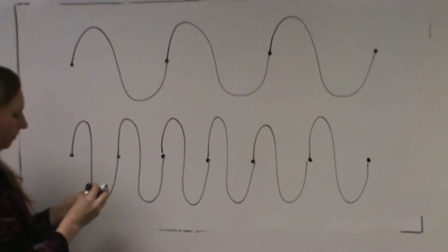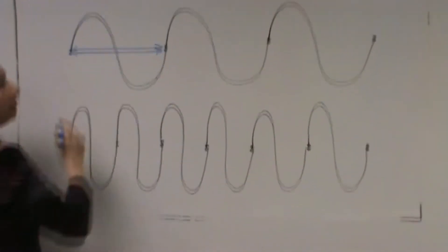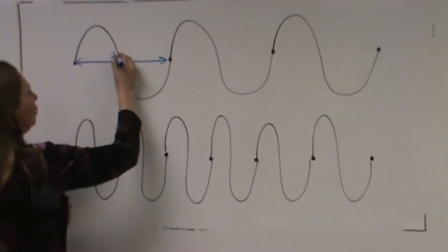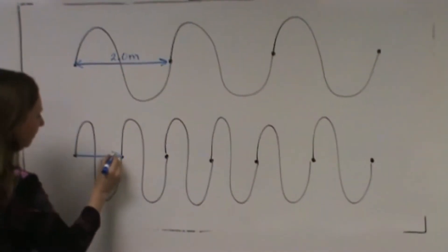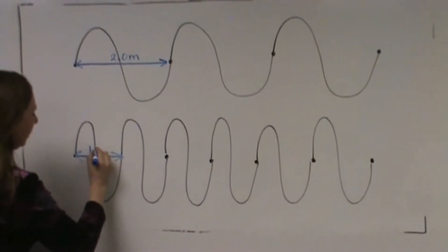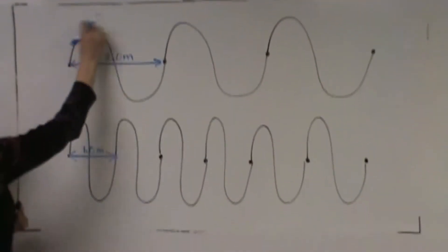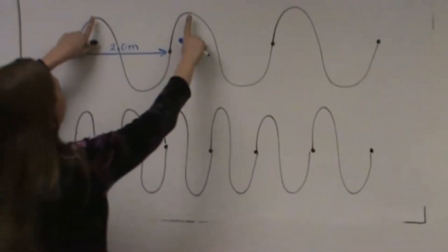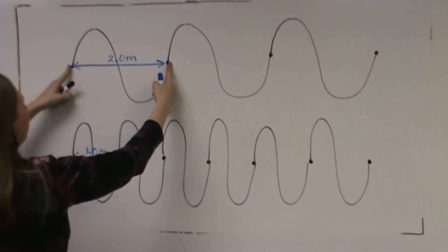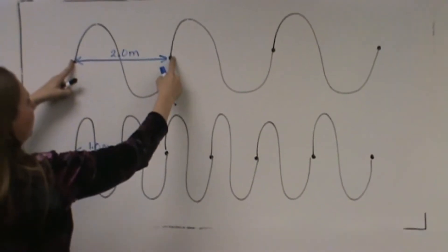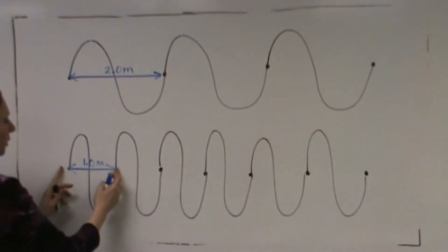Let's say that this wavelength here — from here to here — is two meters. That means that the wavelength of the second wave is only one meter. Crest to trough is one wavelength; crest to crest is one wavelength. So the wavelength of the first wave is two meters, and the wavelength of the second wave is only one meter.